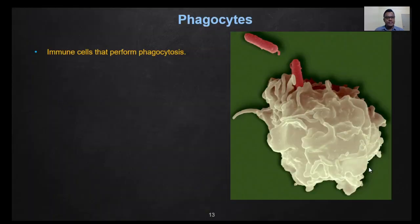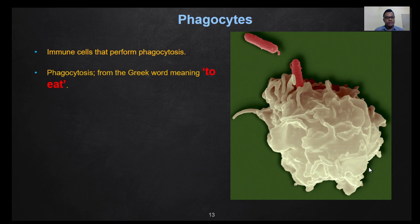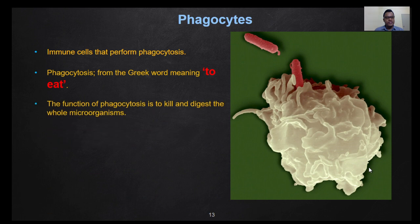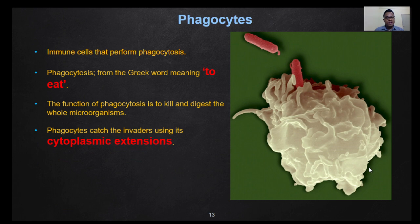First, we have a look at the phagocytes. Phagocytes are immune cells that perform phagocytosis. Phagocytosis comes from the Greek word meaning 'to eat.' The function of phagocytosis is to kill and digest whole microorganisms in order to prevent invasion. Phagocytes catch the invaders using their cytoplasmic extensions, as we can observe here.